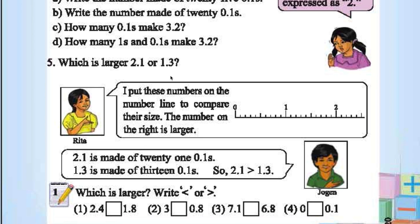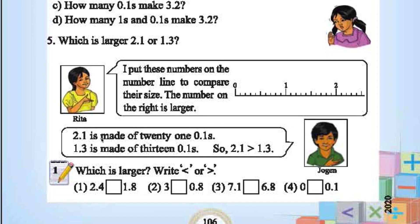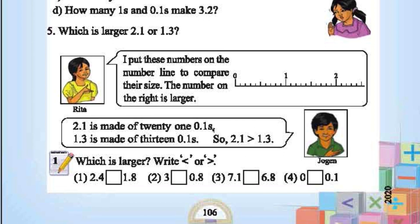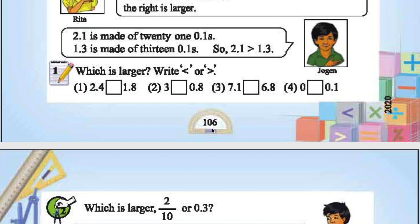Which is larger 2.1 or 1.3? 2.1 is larger. Why? 1.3 is here. 2.1 is here. 2.1 is made up of 21 0.1's. 1.3 is made up of 13 0.1's. So 2.1 is greater than 1.3. Another way of proving it.